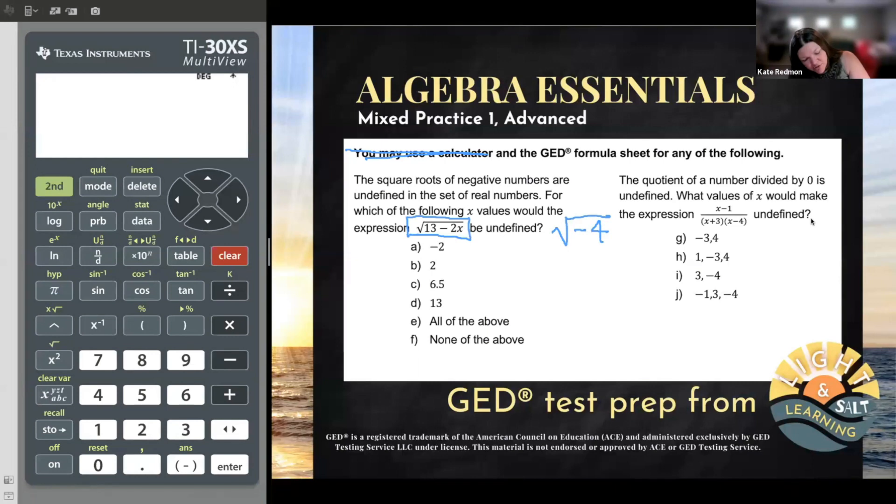And so here are some possible values for x. It says for which of the following x values would the expression be undefined? So let's plug these values in for x substitution and see if it gives us a negative number, which would make this expression undefined. So what if it was the square root of 13 minus 2x? And we first tried to plug in the negative 2. So I'd still have a 13, a minus, and a 2, but my x would turn into negative 2. Now I'm simplifying by hand. It gets a little trickier, but we can do this. We're advanced level students. So we're supposed to do multiplication before addition and subtraction. So I'm going to examine this second part.